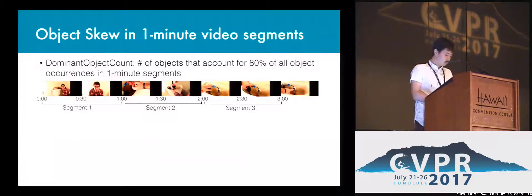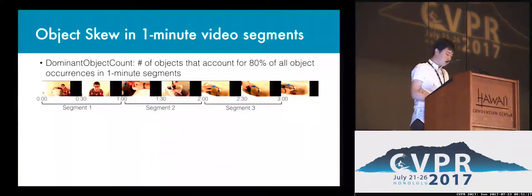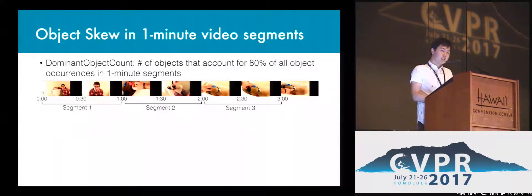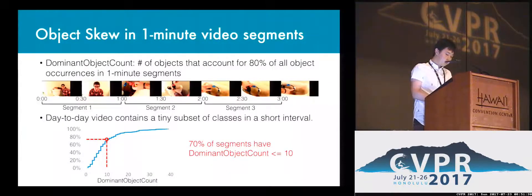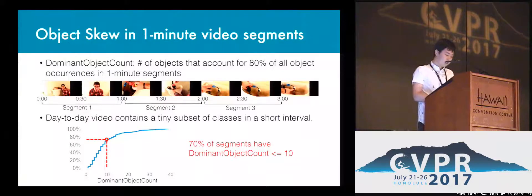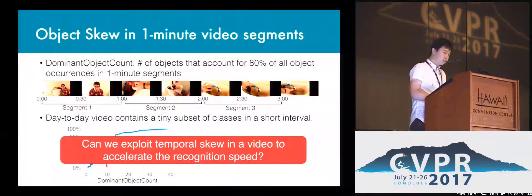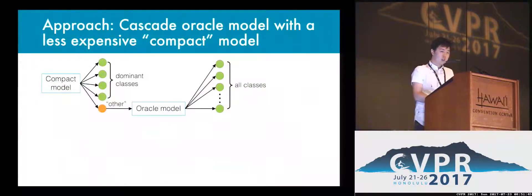So how can we reconcile this? We observe that day-to-day videos tend to have a small number of entities within a short interval. To verify this, we define one metric called Dominant Object Count as the number of object classes that account for 80% of all objects' occurrences in a one-minute segment. We analyzed 30 day-to-day videos and split them into one-minute segments. We found that 70% of segments have Dominant Object Count no more than 10, and 90% have no more than 15.